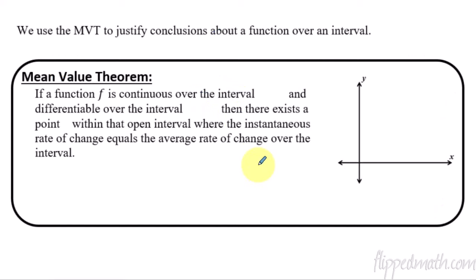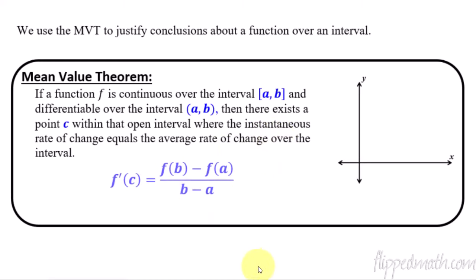So let's formally define this, because this is the mean value theorem. We have a function f that is continuous over a closed interval [A, B]. We also know it's differentiable over that same interval, but this one can be an open interval — we don't care about the endpoints being differentiable, just what's in between. Then there exists a point C somewhere in the middle of A and B where the instantaneous rate of change equals the average rate of change. You just take the derivative and set it equal to the average rate of change, or the slope between two points on that interval.